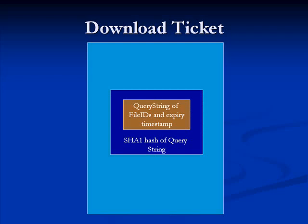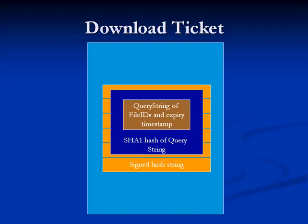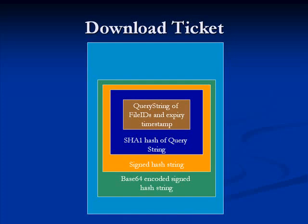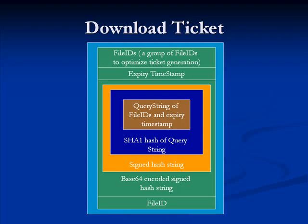As a next step, we generate a SHA1 hash of this query string, and then we sign this hash using an RSA crypto provider private key. We then Base64-encode this signed hash string. We also add the raw format of the file IDs used to construct the hash, as well as the file ID itself and the expected timestamp, back onto the ticket. You don't need to know all the nitty-gritty details, but this gives an idea of how the download ticket looks like. In the demo section, I'll show you sample GET requests, sample GET responses, and sample download tickets.